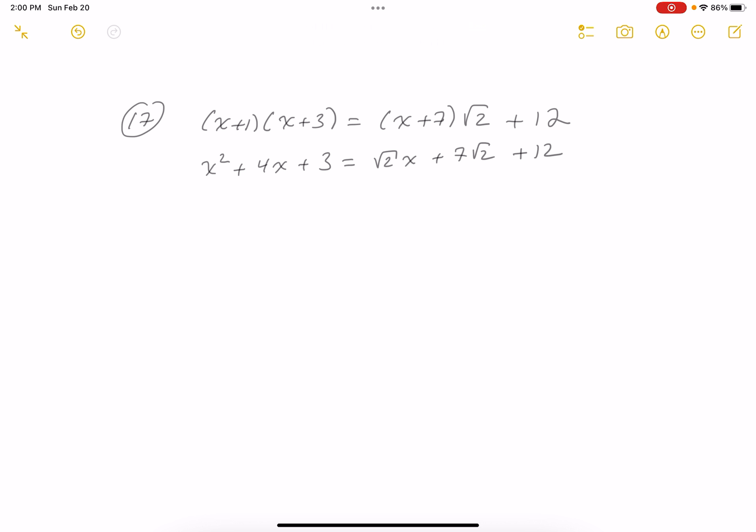I'm looking at this thing, and I think I am going to use completing the square on it. So I'm going to write down X squared plus 4 minus root 2X. And then what do I get? I would get equals 7 root 2 plus 9.